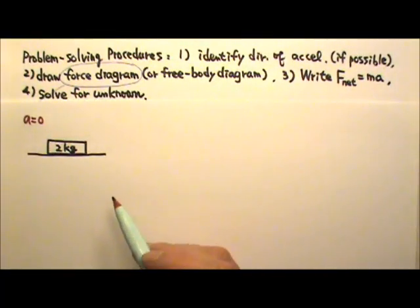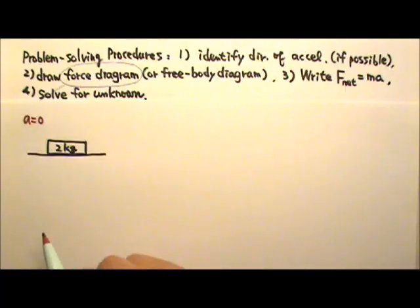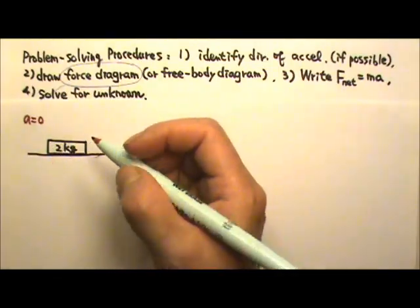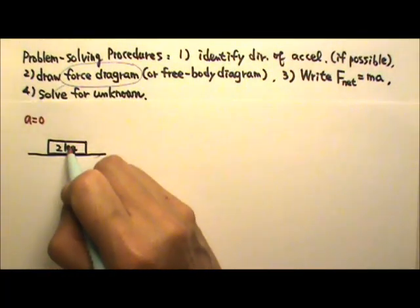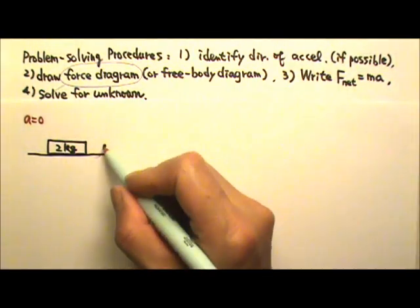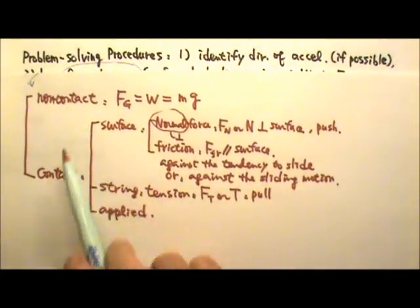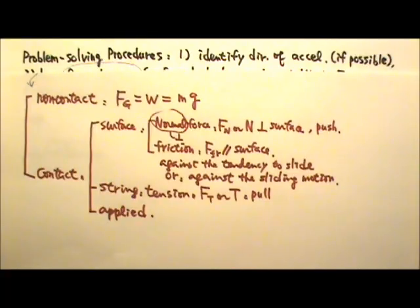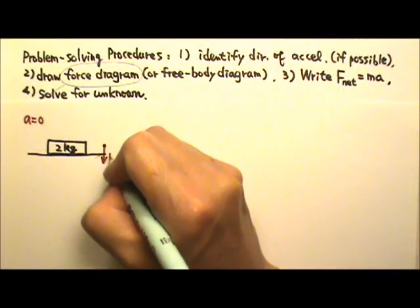There is no direction for acceleration. Then we draw the force diagram to show all the forces acting on the book. We can just draw a dot to represent the object. For the forces, we have non-contact force and contact force. The only non-contact force here is the gravitational force, mg, and gravity always pulls straight down — so we have mg pointing straight down.